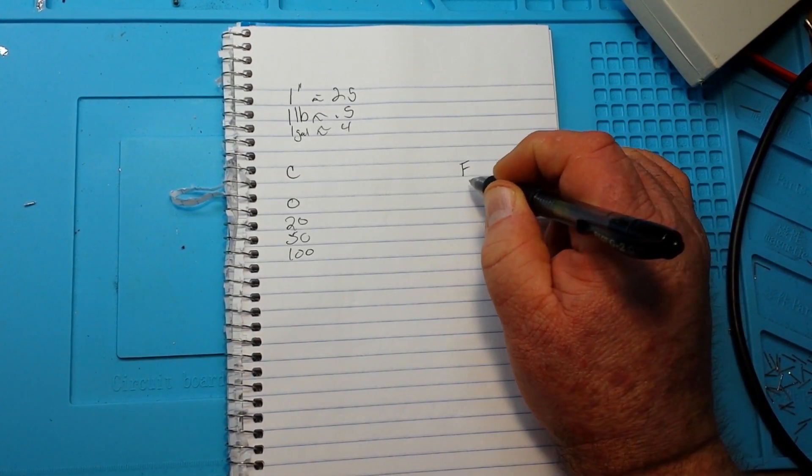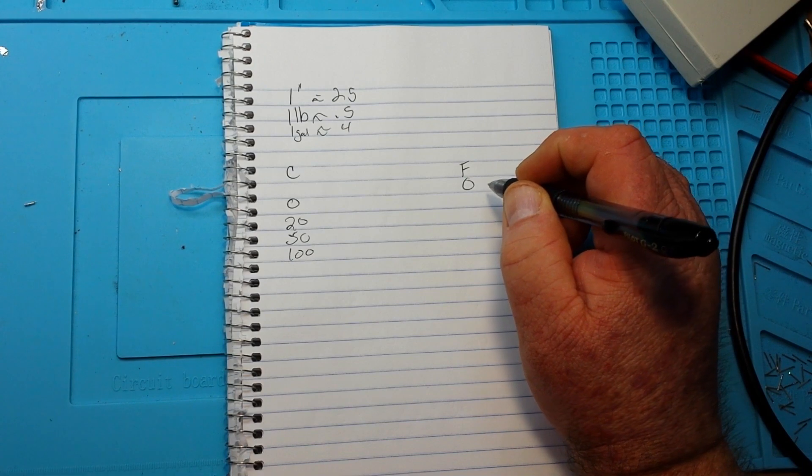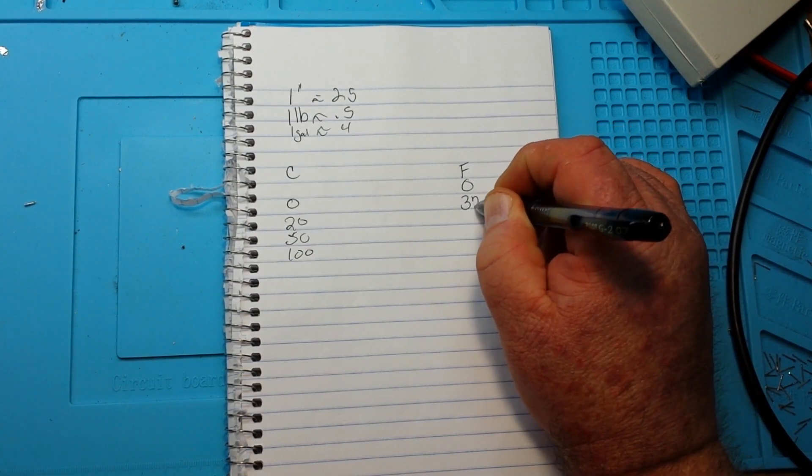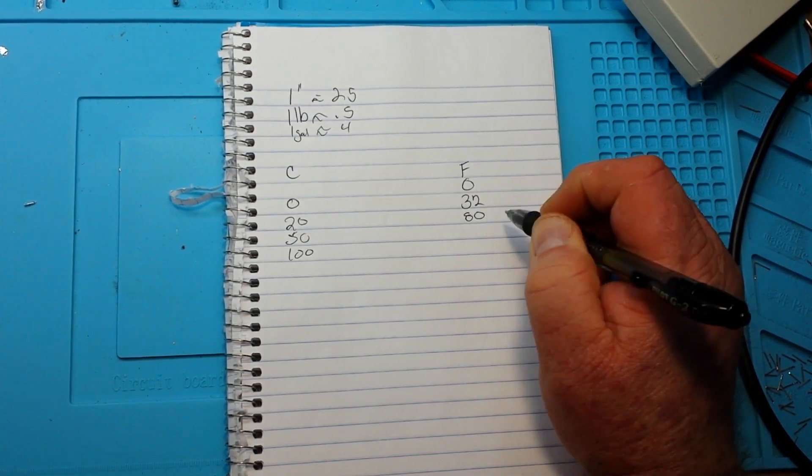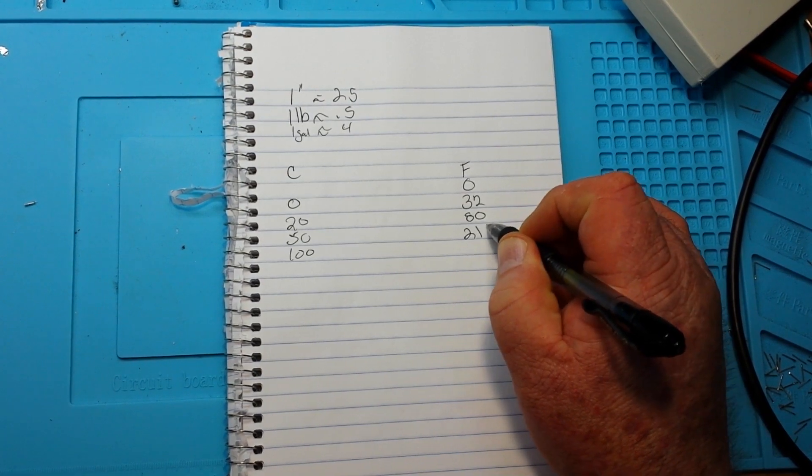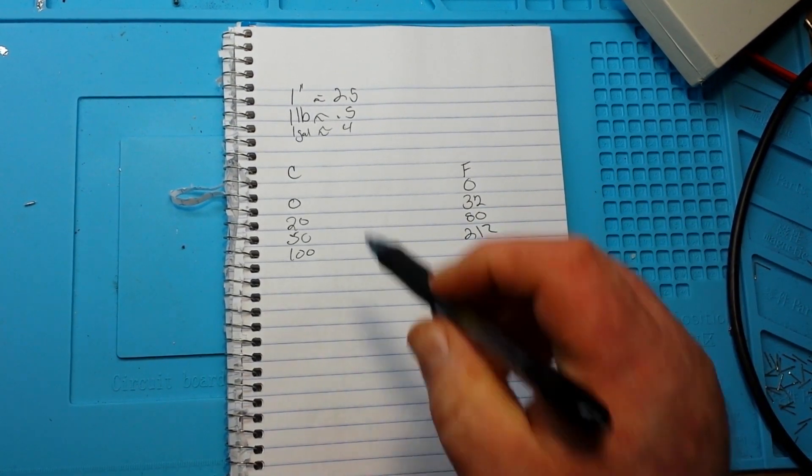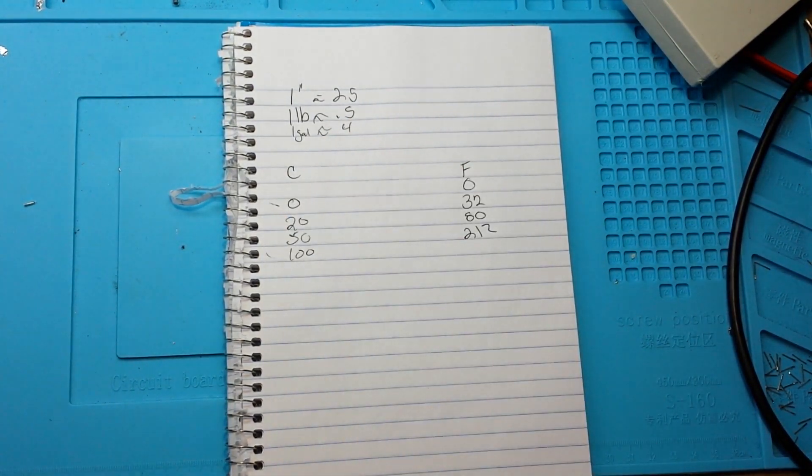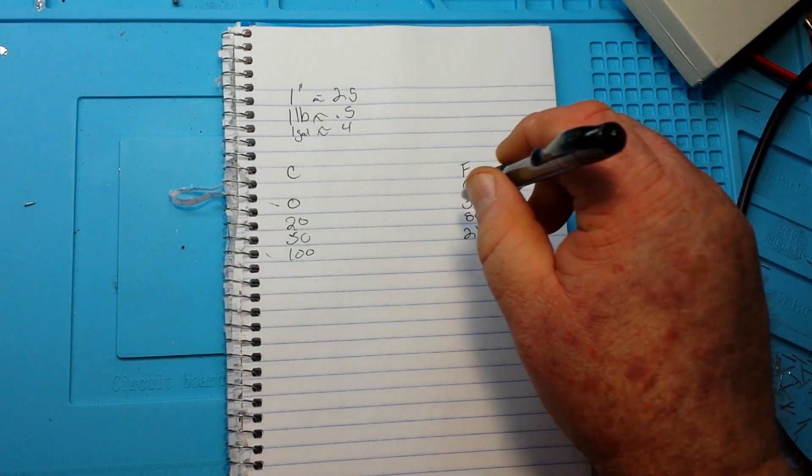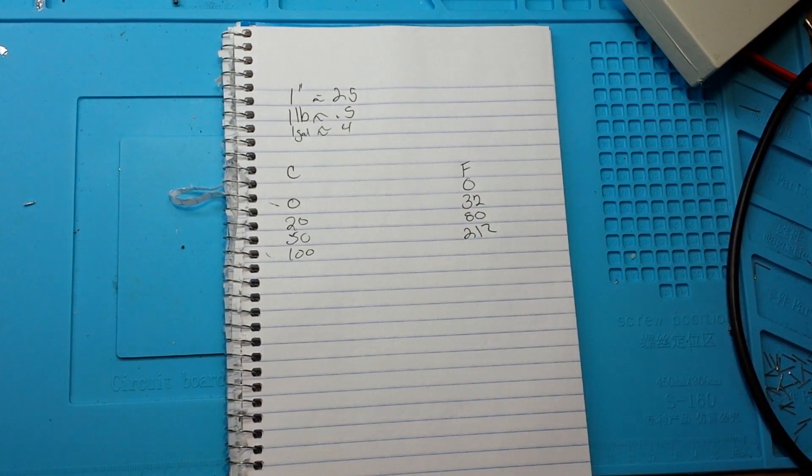And then for Fahrenheit we will say zero also, 32, 80, and 212. Now of course I picked zero and 100 degrees Celsius because that's where water freezes and boils. For Fahrenheit it's 32 and 212.